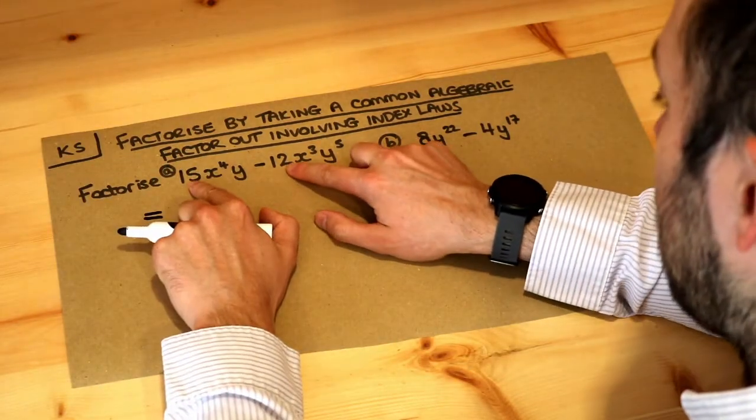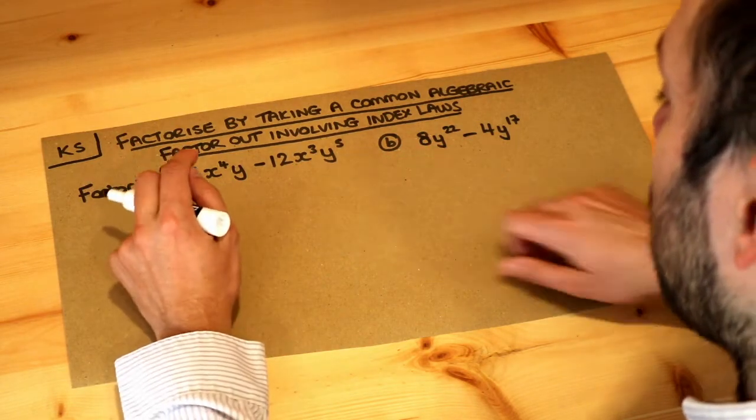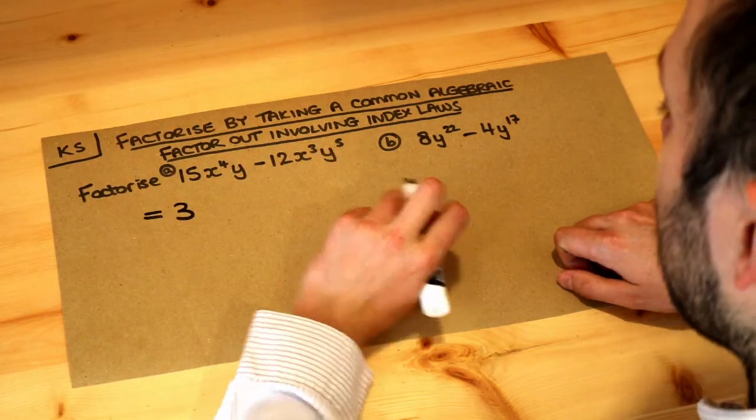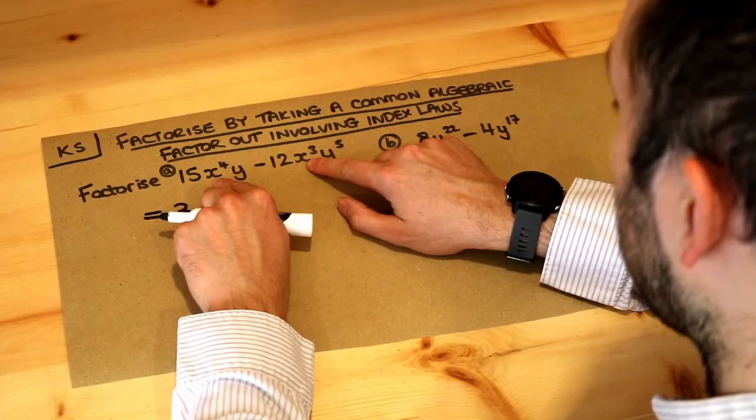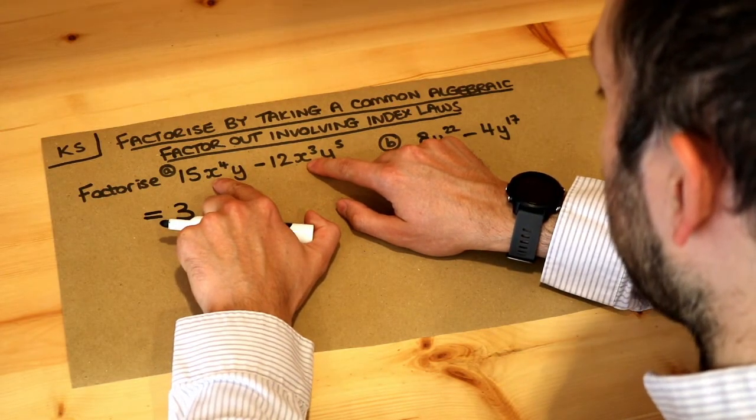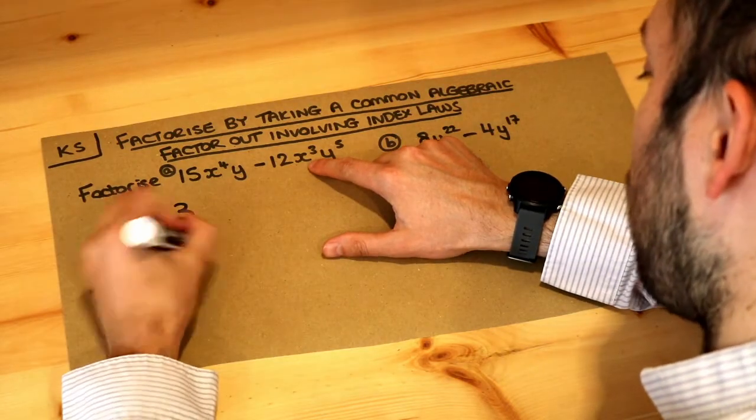Well, numbers first: 15 and 12, what's a factor common to 12 and 15? Well, 3 is common to both so we're going to take the 3 out. What else can we take out? Where we've got x to the 4 and x to the 3, we always take out the lower of the two powers, so factor out the lower of the two powers.